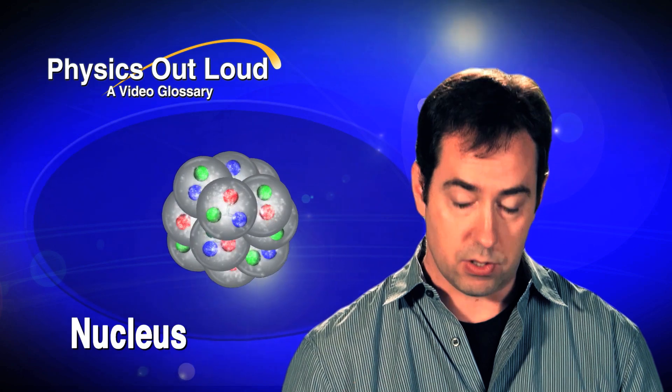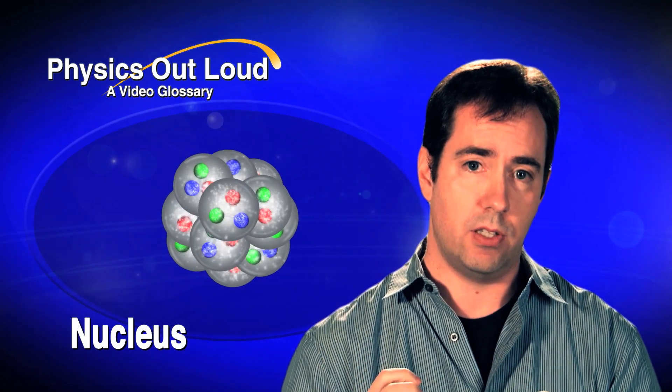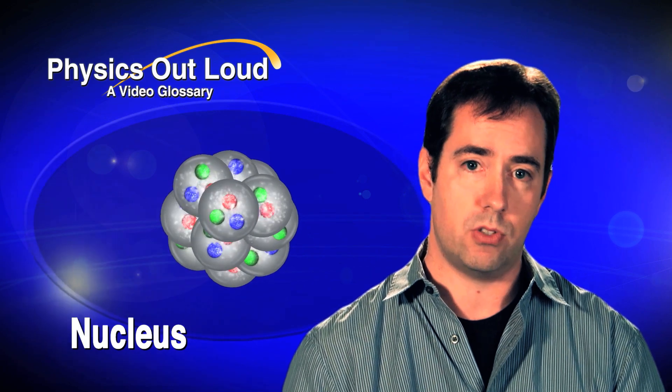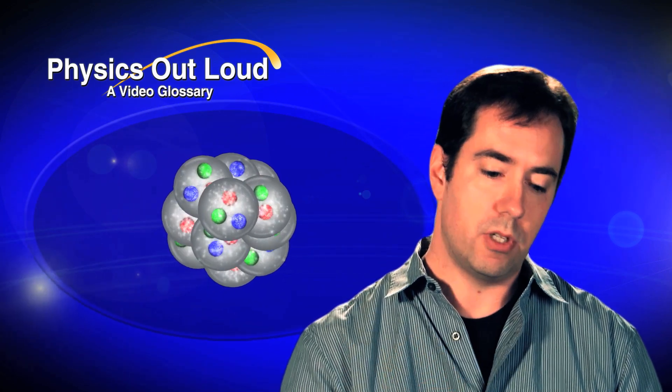The proton and the neutron together are the basic constituents of the atomic nucleus. So if you look at any element in the periodic table, the nucleus of those elements is composed of a certain number of protons and a certain number of neutrons.